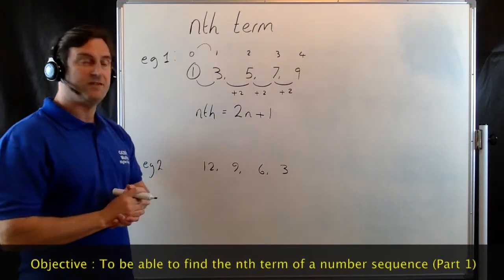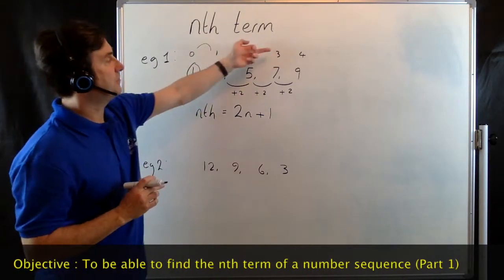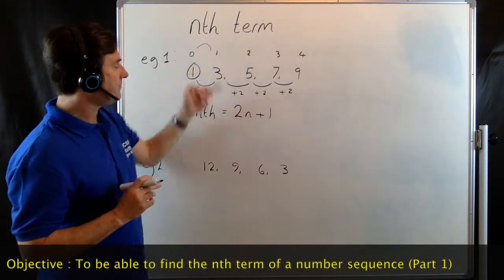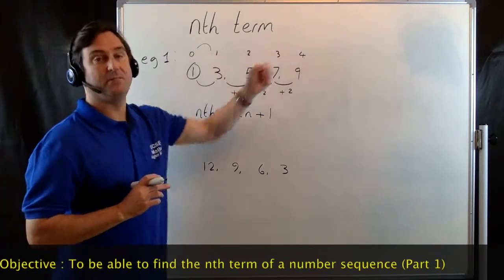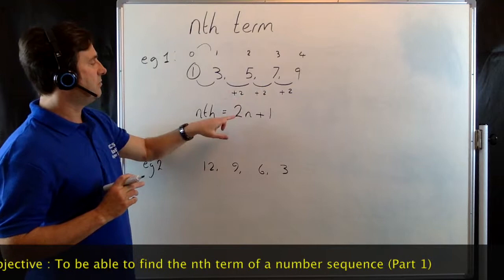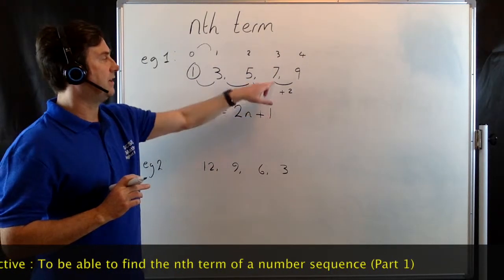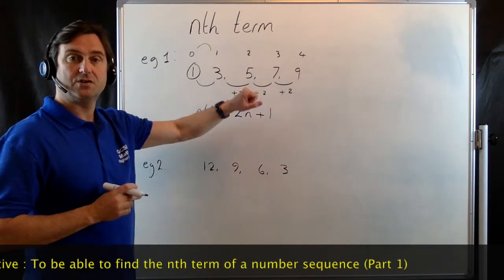We can check this very easily by seeing if it works in our sequence. Let's take the third term for example. n stands for the term number. So when we're on the third term, we would do 2 times 3. 2 times 3 is 6. Add the 1 gives me 7. It works.